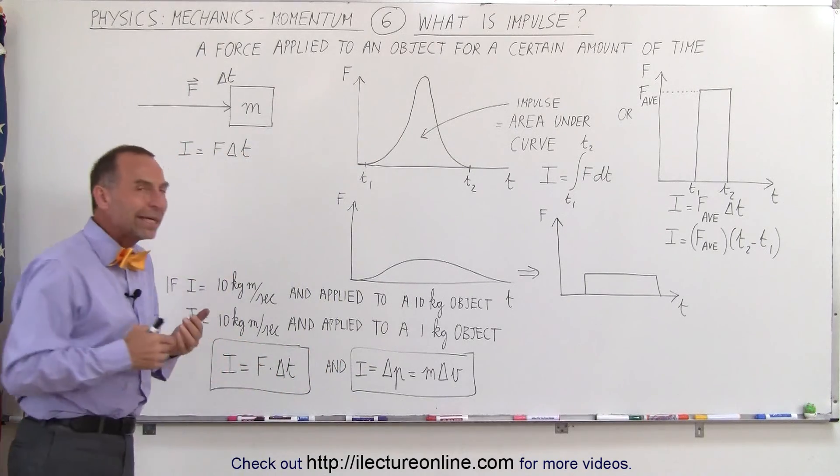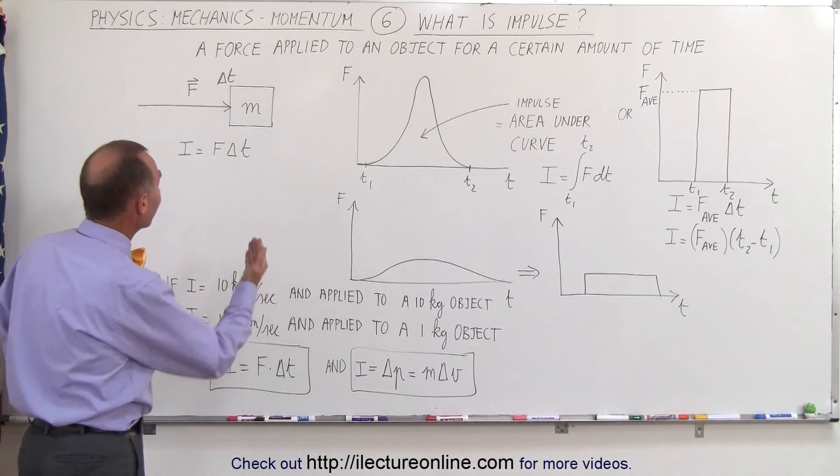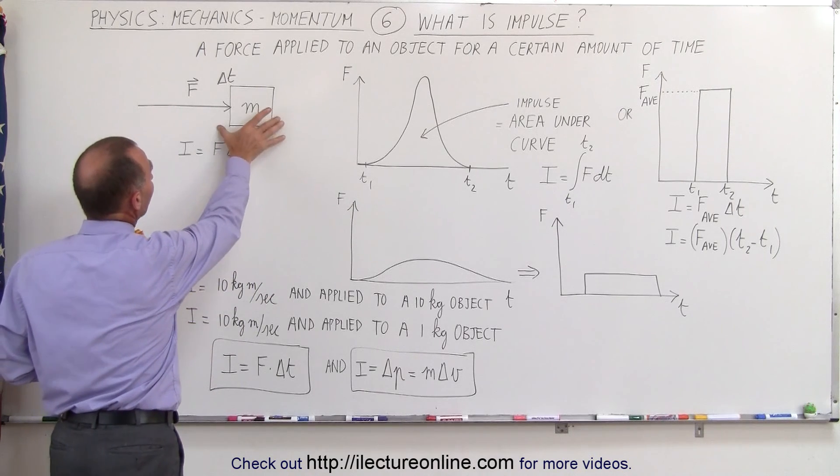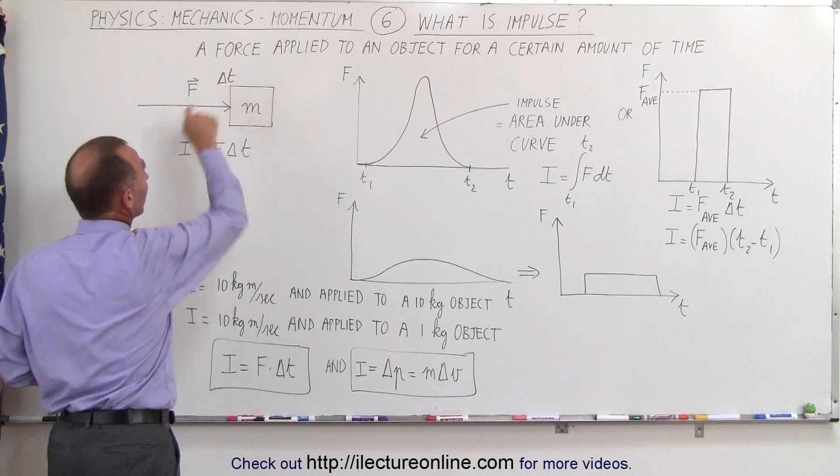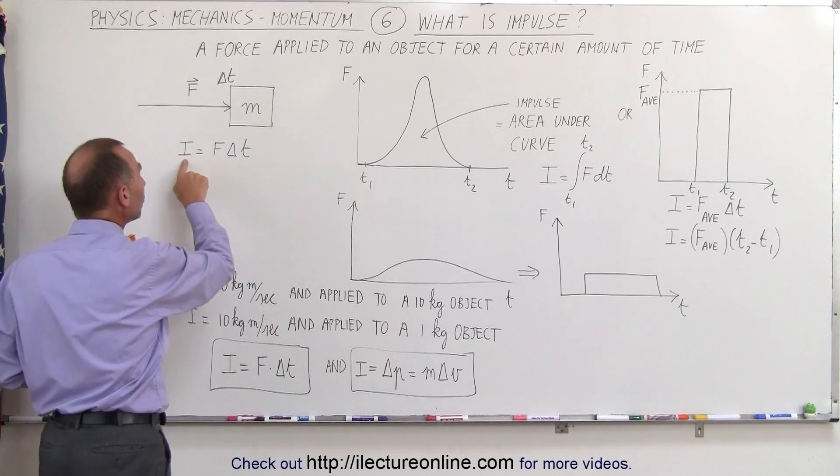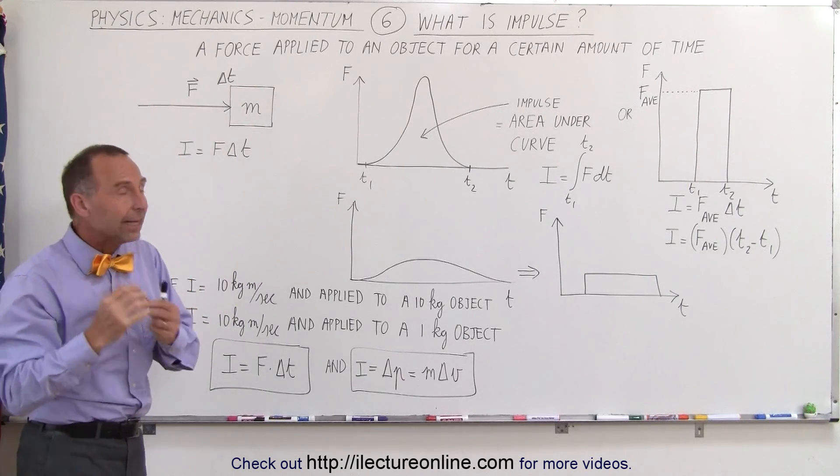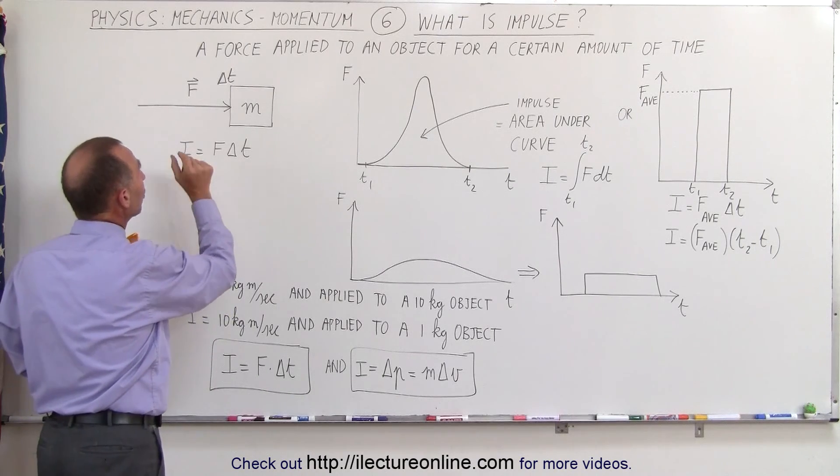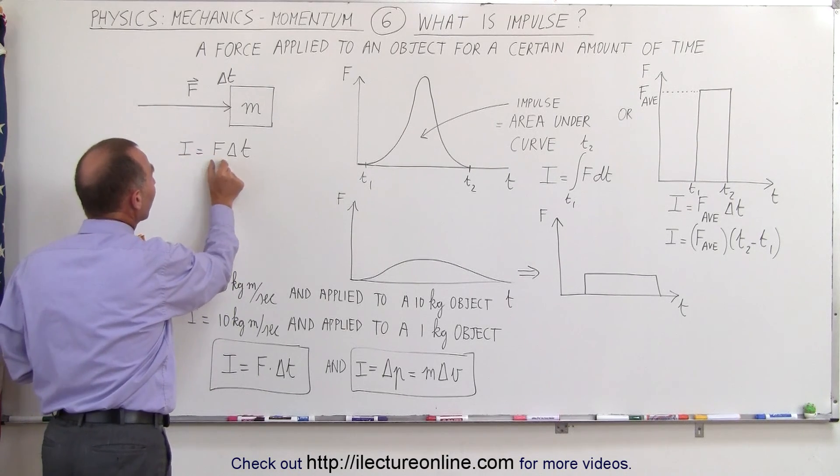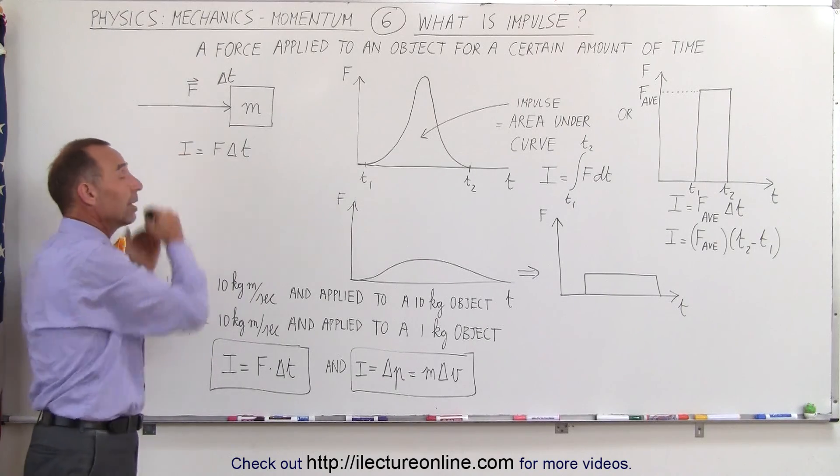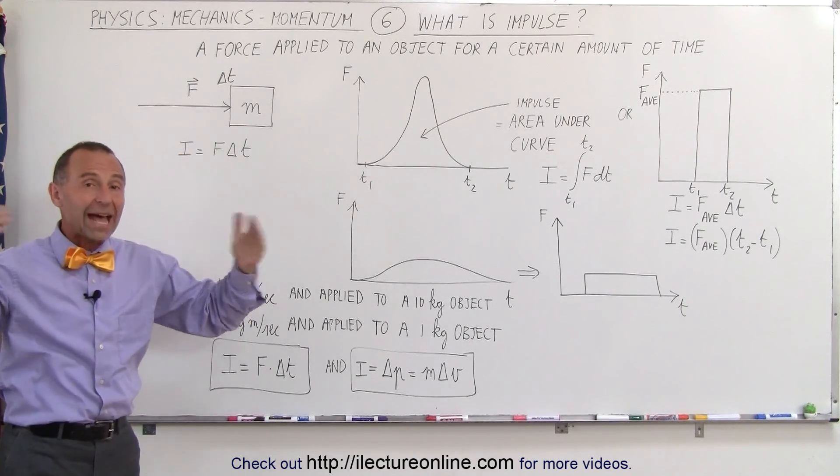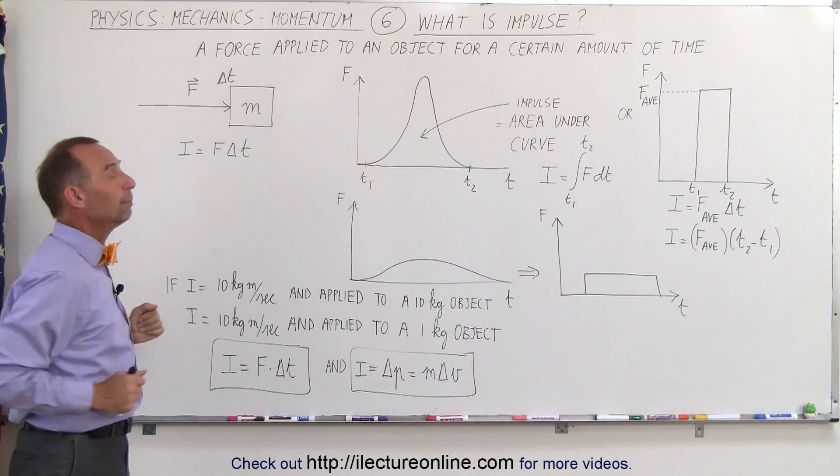Now, how do we calculate the impulse? Well, here we have graphically a concept where you have a mass, an object that has mass, and you're applying a force for a certain amount of time. The impulse, and we use the capital letter I to indicate impulse, is equal to the product of the force times delta T. So the greater the force, the greater the impulse. The longer the force acts on the object, the greater the impulse.